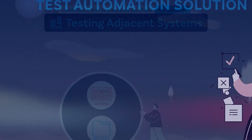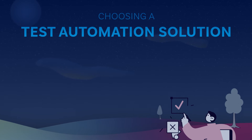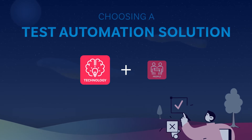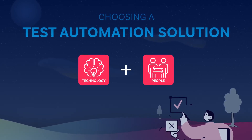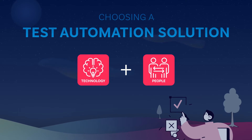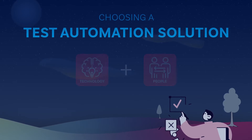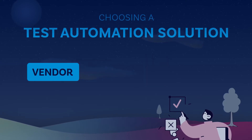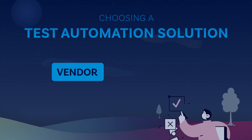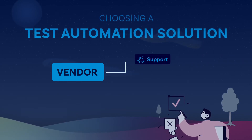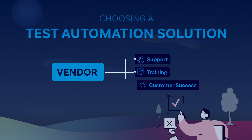But it's not just the technology that defines a good product — it's also the people behind the product and what they're doing to help you succeed. The other major factor you'll want to evaluate when deciding which test automation solution to go with is the vendor. Key considerations for evaluating testing solution vendors include support, training, and customer success.